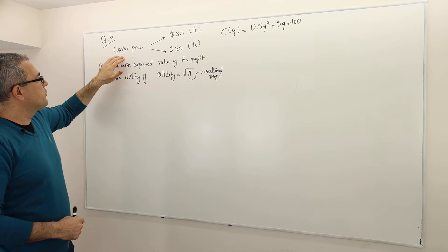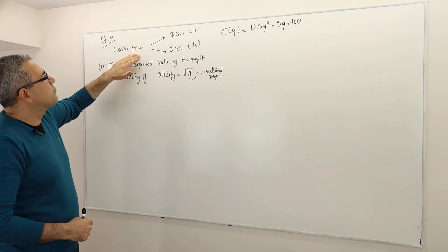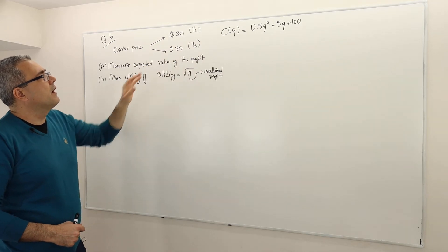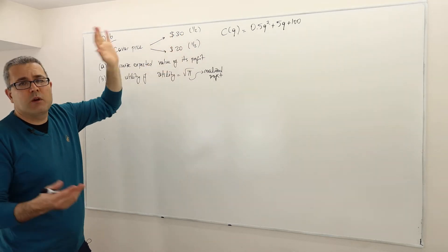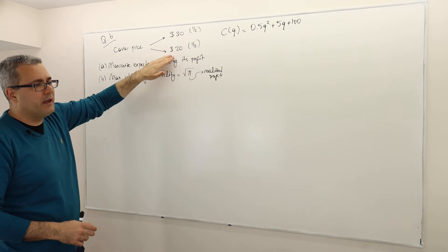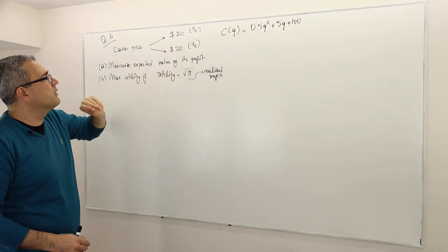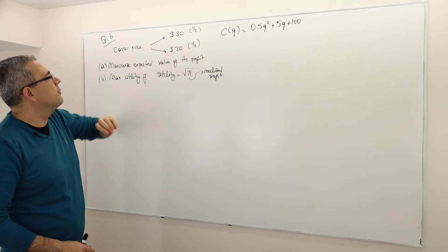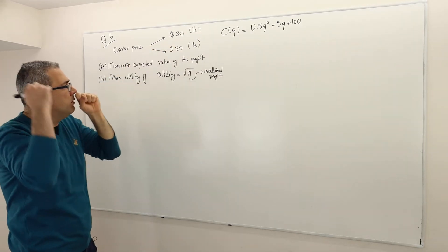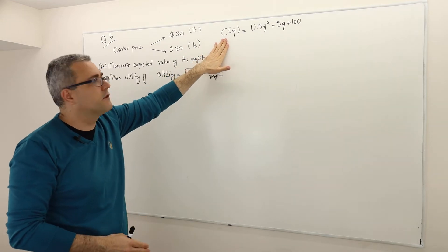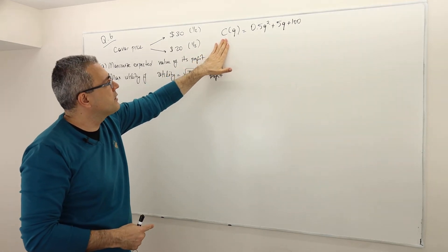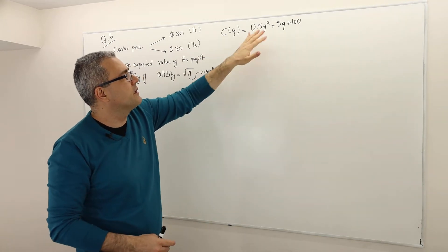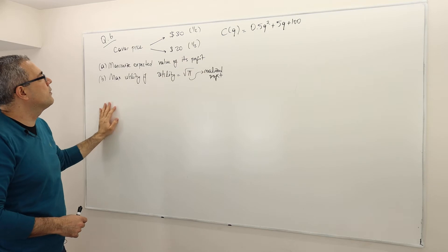The firm is producing caviar and its price is either $30 or $20. Both of those events — whether the weather is good versus the weather is bad — are equally likely. So one-half is the probability for each price. This is the total cost function of this producer, which is a function of quantity. There's a fixed cost and a variable cost of this functional form.